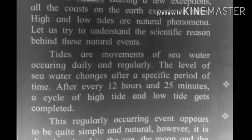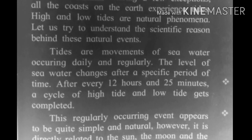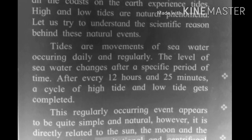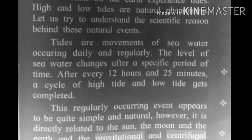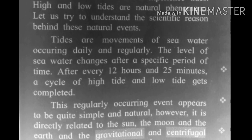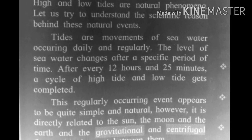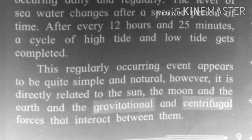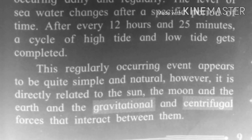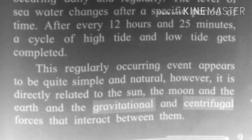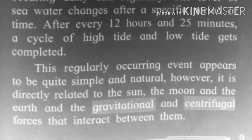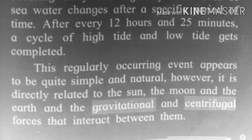Tides are the movements of seawater occurring daily and regularly. The level of seawater changes after a specific period of time — after every 12 hours and 25 minutes, a cycle of high tide and low tide gets completed. This regularly occurring event appears quite simple and natural; however, it is directly related to the Sun, the Moon, and the Earth, and the gravitational and centrifugal forces that interact between them.